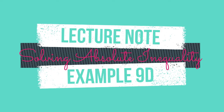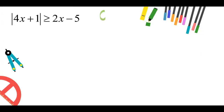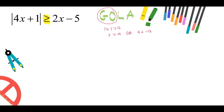Moving on to example 9d in your lecture notes: solve the absolute inequality absolute value of 4x plus 1 greater than or equal to 2x minus 5. Since this absolute inequality has one modulus we use the GOLA method. For this question we use GO instead of LA, because GO means greater than. So absolute value of x greater than or equal to a means x is greater than or equal to a or x less than or equal to minus a.